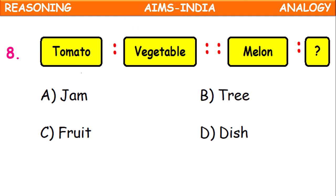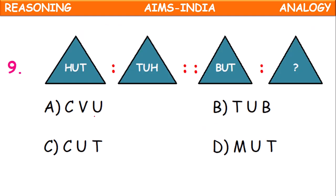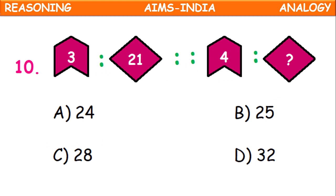Next challenge: Tomato is related to vegetable — tomato is a vegetable. Then melon is a fruit — option C. Next: Hut reversed becomes TUH. Butt reversed will become TUB — T, U, B. Next: 3 is to 21 — 3 times 7 equals 21. So 4 times 7 equals 28. Option C is the correct answer.